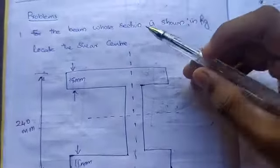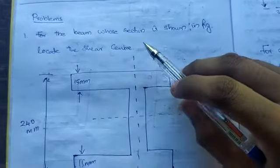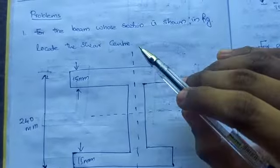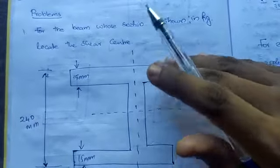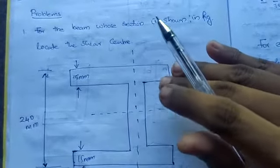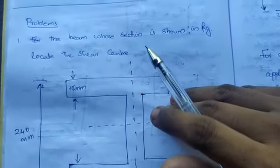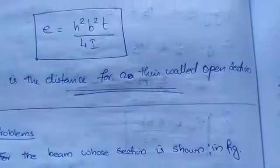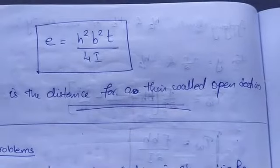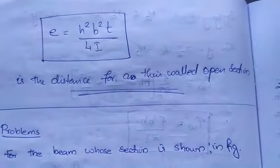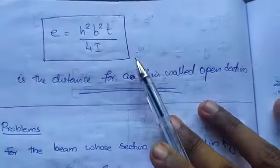Today we'll discuss a problem on shear center. In the last class we derived the formula to find the shear center for a thin open section. From that you found the eccentricity is h²b²t/4I. Using this equation we'll be solving the problem, not only this equation, the whole concept should be known.